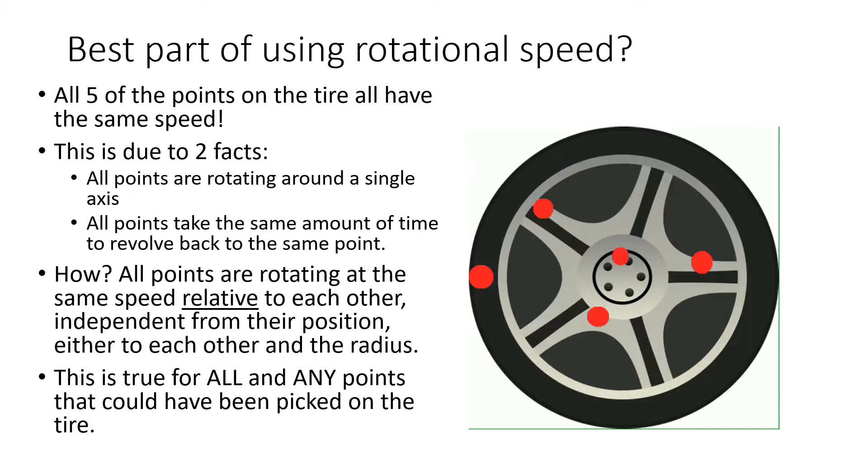How? All points are rotating at the same speed relative to each other, independent from their position, either to each other and the radius. This is true for all and any points that could have been picked on the tire.